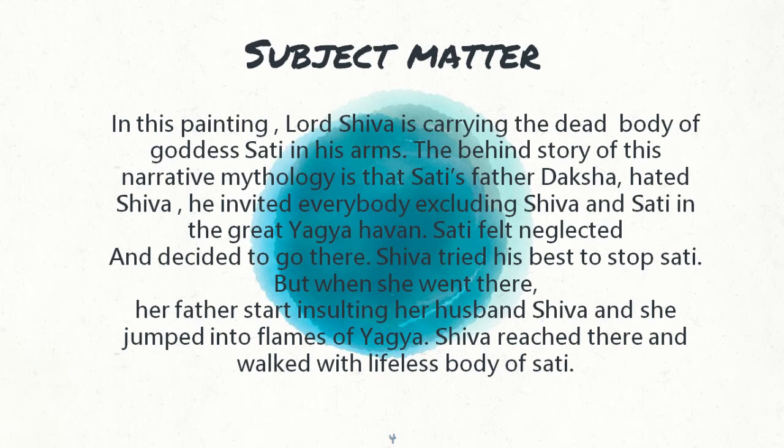The background story: Daksha excluded Shiva and Sati from his great yagna or havan, and invited everyone else — kings from other states and countries. Sati felt neglected and didn't feel good that her father held such a great yagna but called neither her nor her husband. So Sati decided to go there anyway.